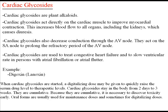An example of a cardiac glycoside, probably the most common, is digoxin. When cardiac glycosides are started, a digitalizing dose may be given to quickly raise the serum drug level to therapeutic levels. Cardiac glycosides stay in the body from two days to three weeks. Oral forms are usually used for maintenance doses and sometimes for digitalizing doses. The usual maintenance dose for digoxin is 0.125 to 0.5 mg PO daily. Digoxin onsets in half an hour to two hours and lasts typically two to six days.